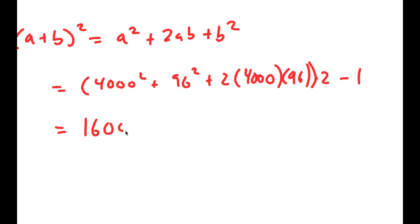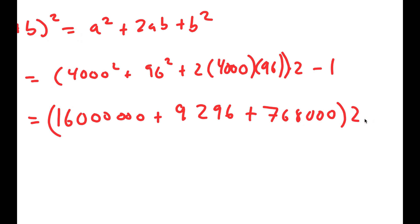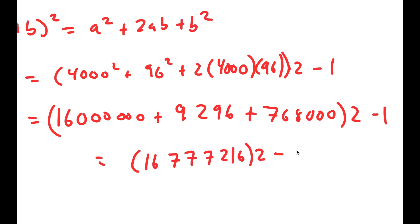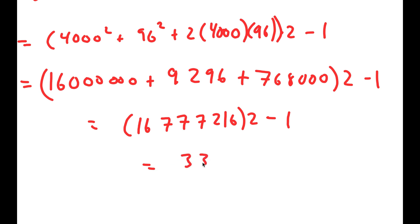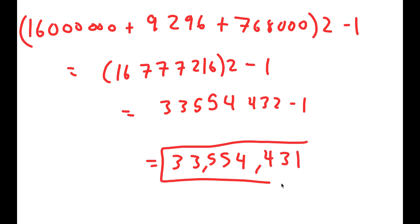So now this is going to equal 16 million — which is 4000 squared — plus 9216 plus 768,000, all times 2 minus 1. This equals 16,777,216 times 2 minus 1, which is 33,554,432 minus 1, which equals 33,554,431. So this is my final answer.